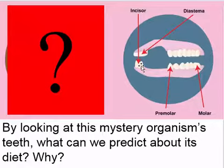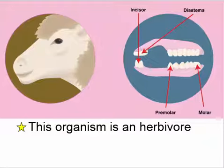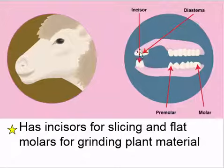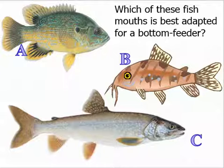Here's another mystery organism — this is the front of its mouth and this is the back of its jaw. This organism is a sheep, and it is a herbivore because it has incisors for slicing — your front teeth, like scissors — and molars in the back for grinding plant material. An animal like a sheep can't just swallow plant material because it's difficult to digest, so it takes time to grind the plant fibers with its molars before swallowing.